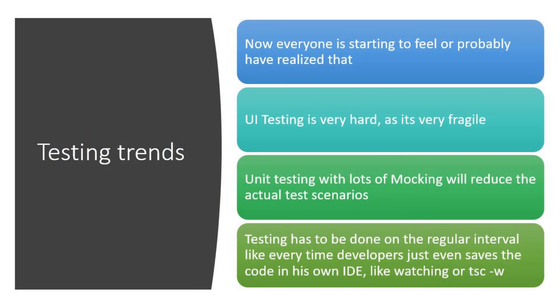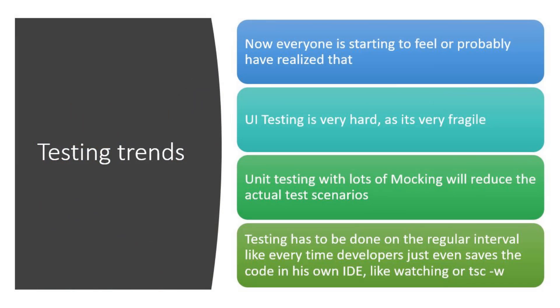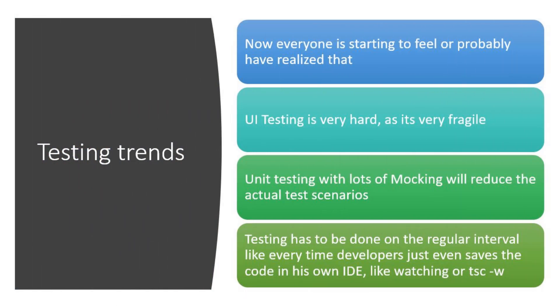Everyone has started to realize that UI testing is actually flaky and fragile. There is a lot of mocking within applications, which can reduce the actual test coverage. Testing has to be done on a regular basis — not just after deploying to an environment. When a developer writes any code, once they save, automation should run to test that method and ensure the application is working. Testing should be integrated at the unit testing level and shipped to testers to make testing more efficient. Many companies are now integrating testing within the development cycle so bugs won't reach QA.